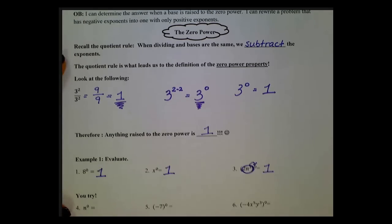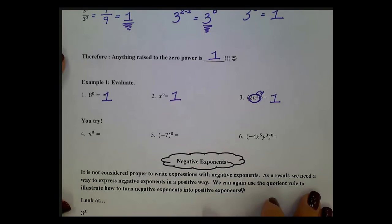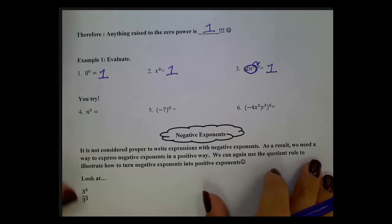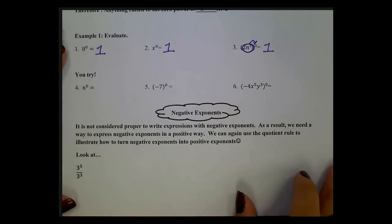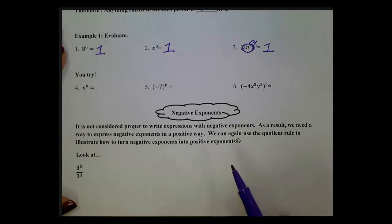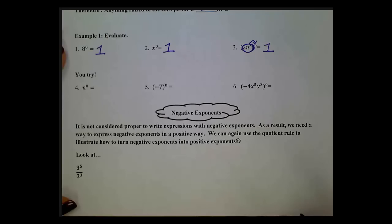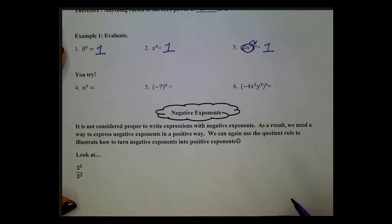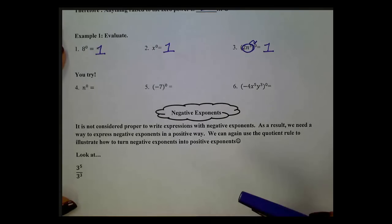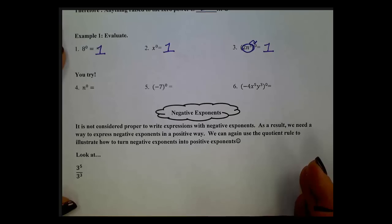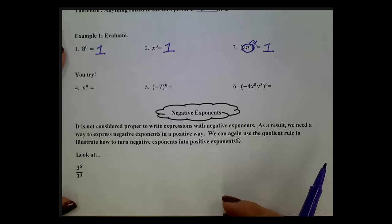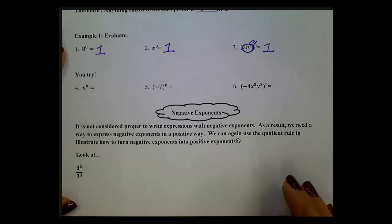We'll save the U-tries and you'll take a look at those tomorrow in class. Now let's move to the concept of negative exponents. It is not considered proper to write expressions with negative exponents. As a result, we need a way to express negative exponents in a positive way. We can again use the quotient rule to illustrate how to turn negative exponents into positive exponents. Just like we always want to reduce our fractions, we always want exponents to be positive.